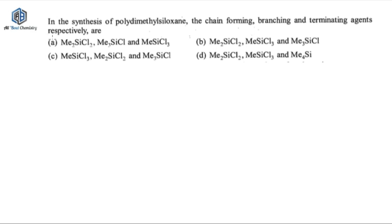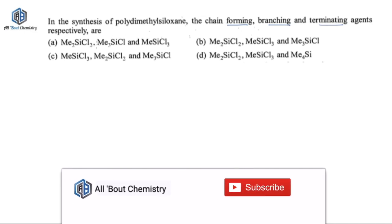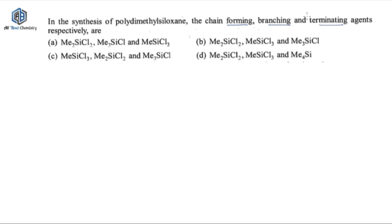The next question is about the synthesis of polydimethylsiloxane. It asks which agents act as chain-forming, branching, and terminating agents. If you know a little about how polymerization happens and the shapes of these molecules, you can easily answer this. Let's draw a hypothetical polymer to understand.